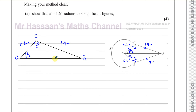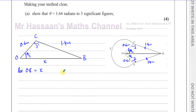To find theta over 2, I have a non-right-angle triangle. I could use the sine rule, but I first need the length OB — I'll call it x. To find x, I can use the cosine rule because I have the included angle of 2 radians between the two known sides 0.6 and 1.4. The cosine rule states: a² = b² + c² − 2bc·cos(A), where side a is opposite angle A.